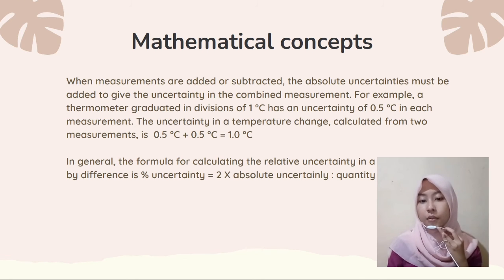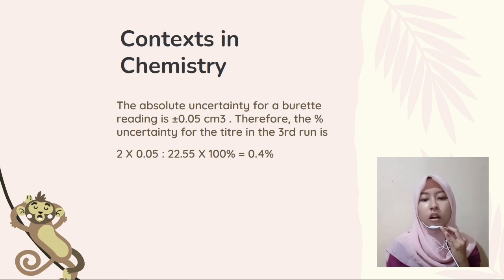In the context in chemistry, the absolute uncertainty for a burette reading is ±0.05 cm³. Therefore, the % uncertainty for the titre in the third run is (2 × 0.05 / 22.55) × 100% = 0.4%.